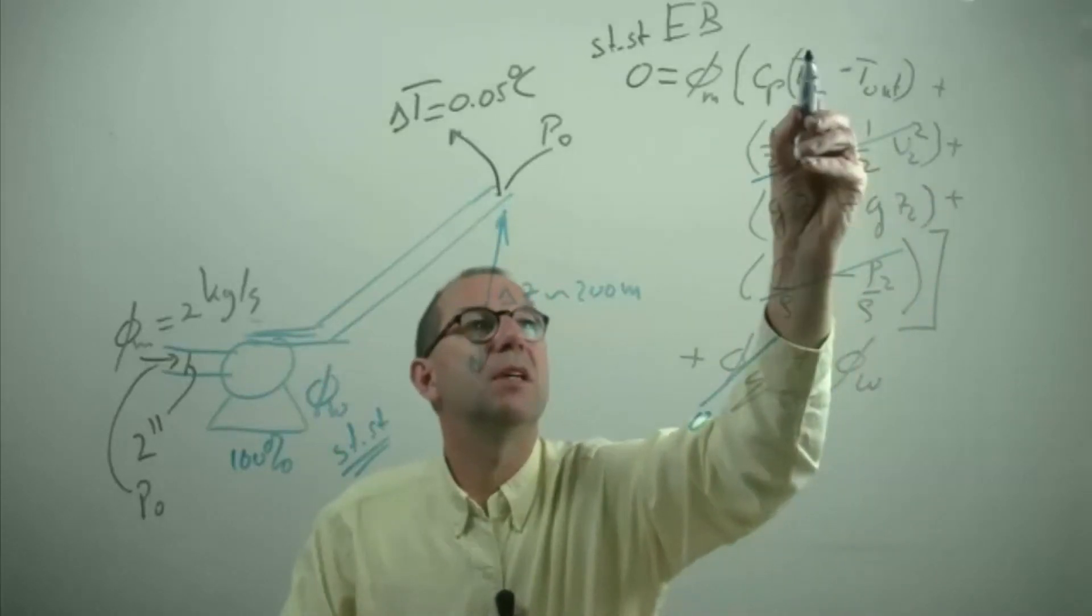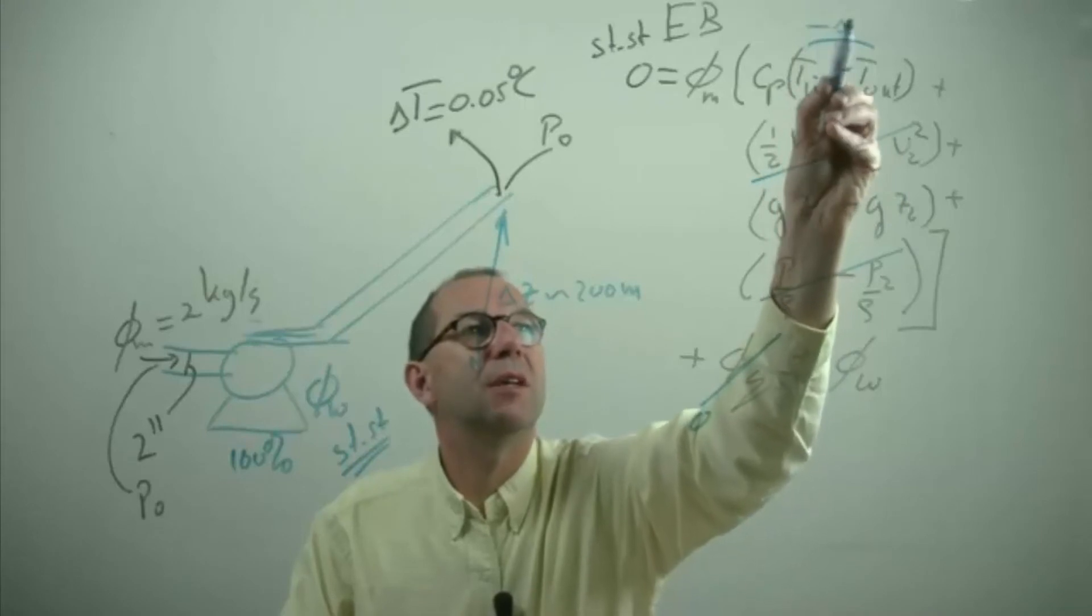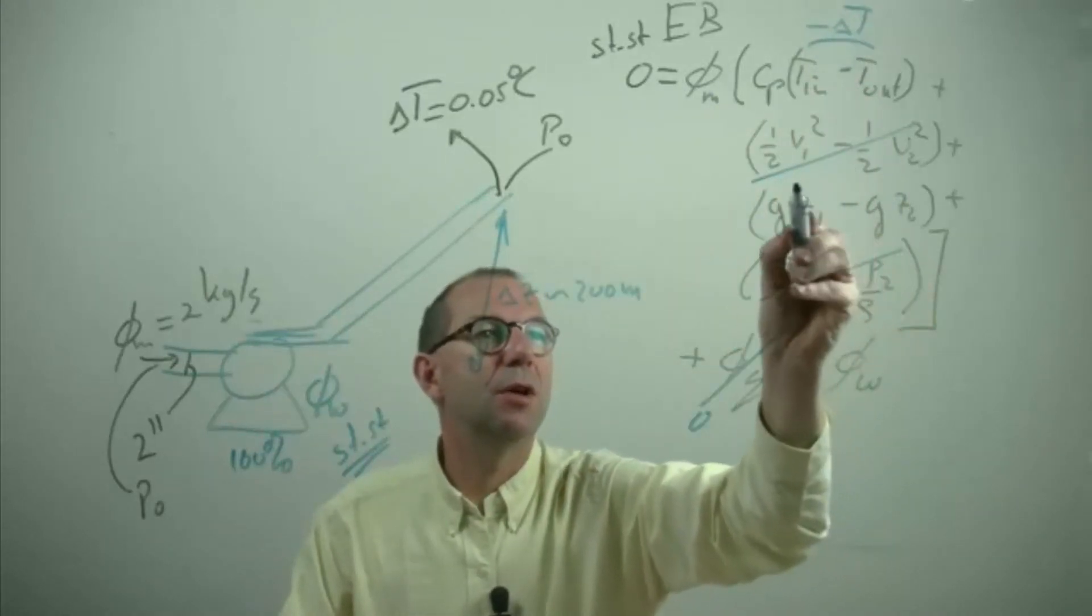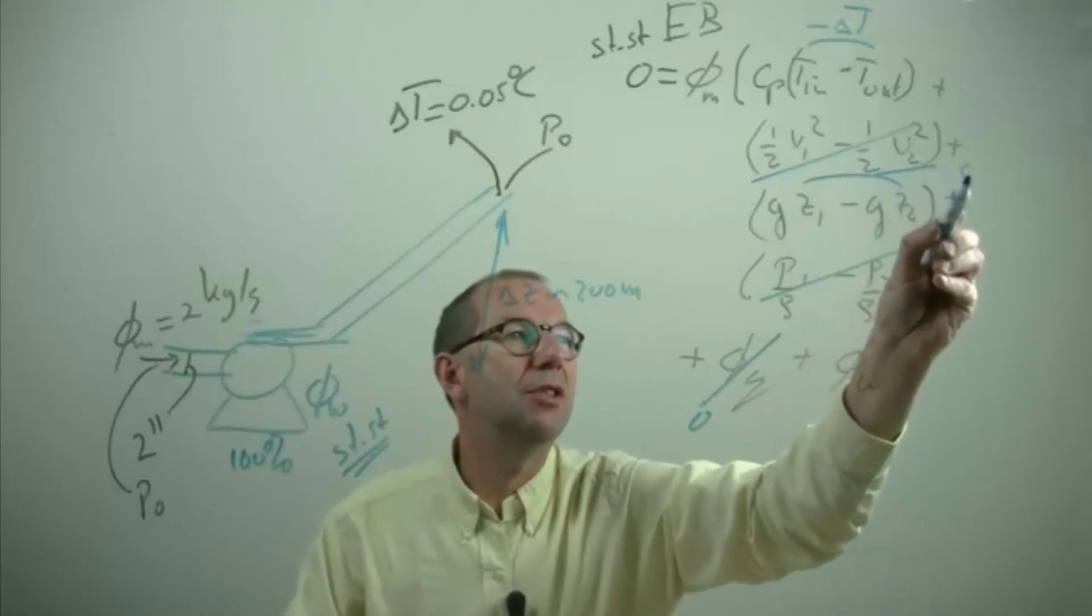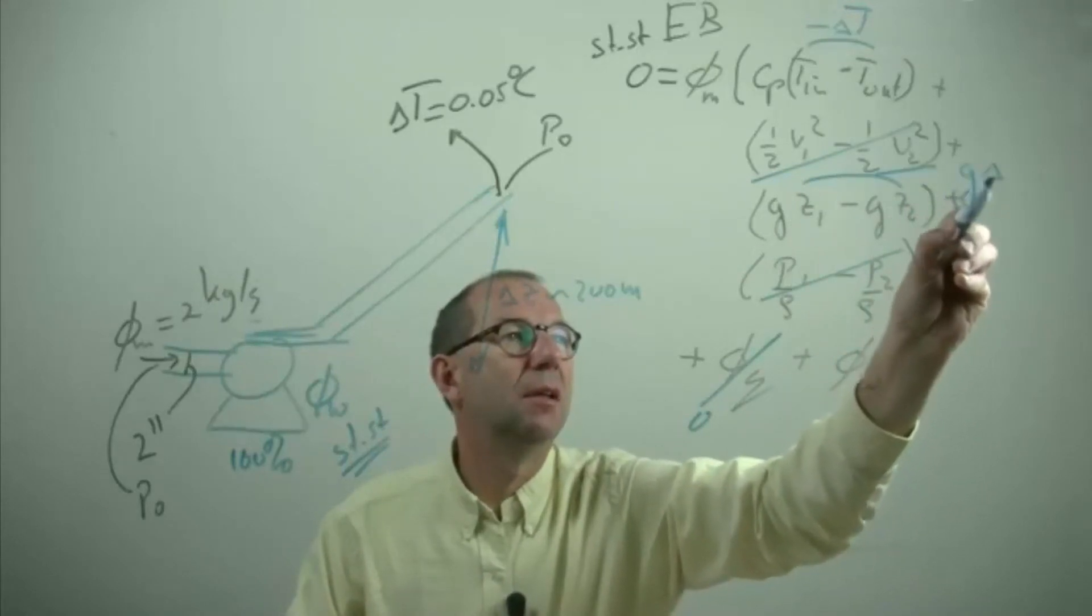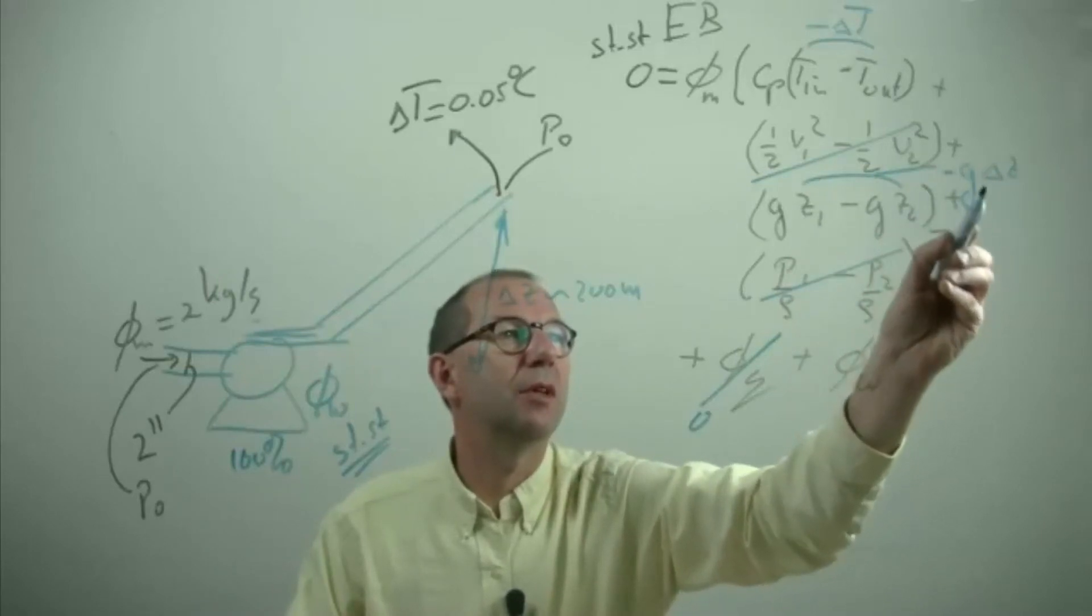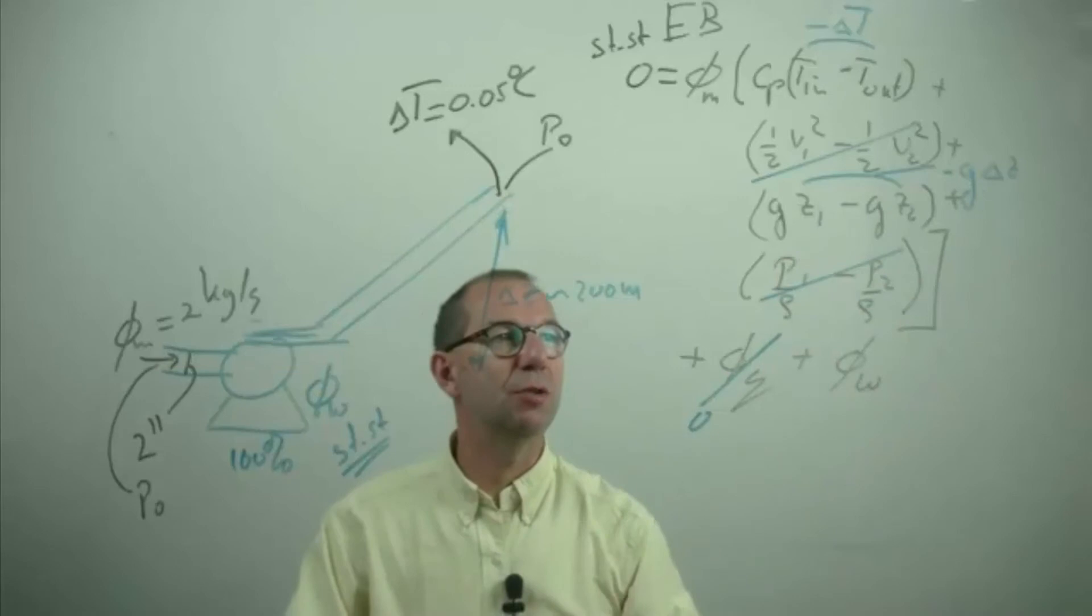This is known, that is minus the delta T that we have. This is also known, that gives me a delta z lifting and there should be a minus in front of it, because z1 is lower than z2.